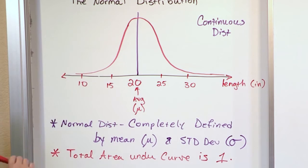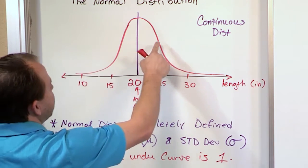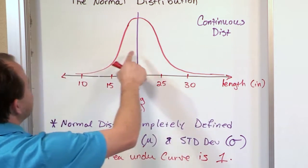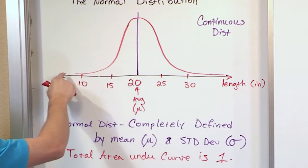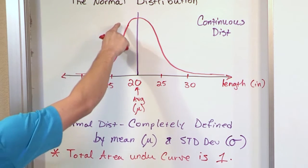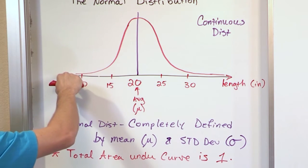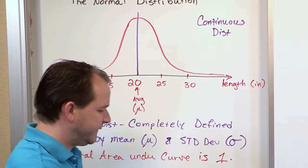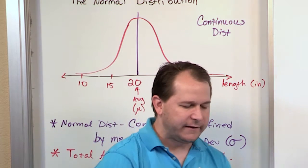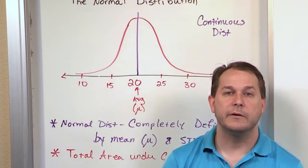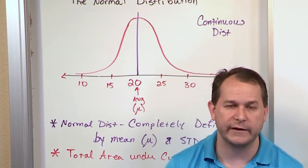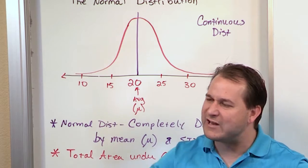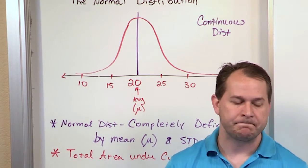This curve does not touch the x-axis. It goes asymptotically — meaning it almost touches but never quite gets down to that axis. That is the normal probability distribution, the most important one you'll ever study and the one that governs 90% of everything you'll do in statistics.